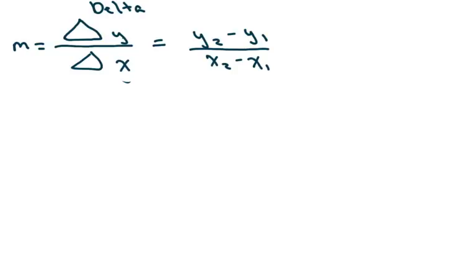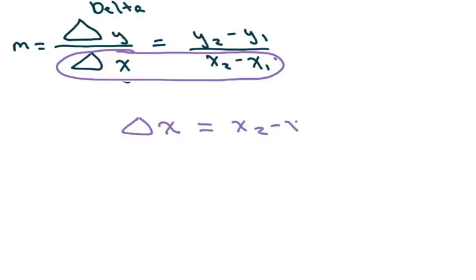Before we go any further, I want to show that, solve for X sub 2 here. So I'm just going to look at this part right here. And no change in X equals X sub 2 minus X sub 1. And I'm going to solve for X sub 2, and I'll show you that Y in a minute. So if I add X sub 1 to both sides, I get X sub 1 plus change in X, okay?